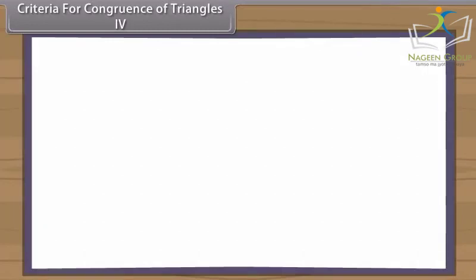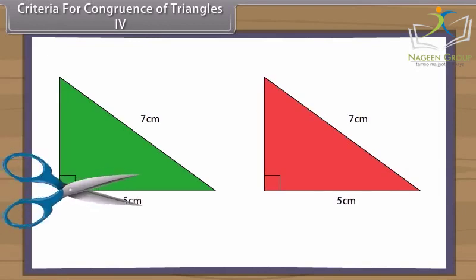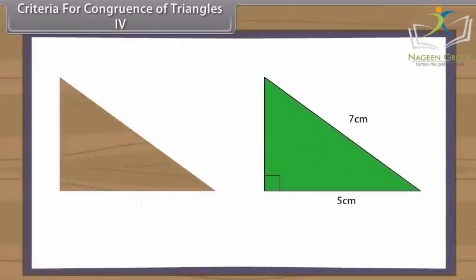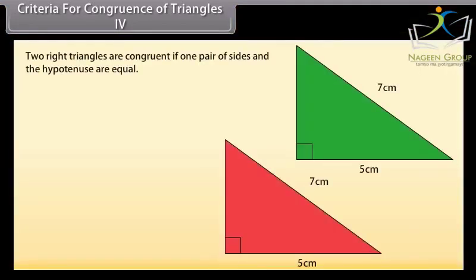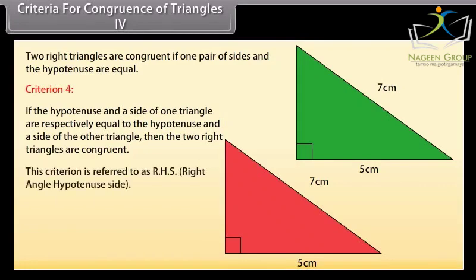Criteria for congruence of triangles 4. Construct two right-angled triangles with hypotenuse equal to 7 cm and one side equal to 5 cm each. Cut them out and place one triangle over the other with the equal side placed on each other. We will observe that the 2 triangles cover each other completely and so they are congruent. Thus, Criterion 4: if the hypotenuse and a side of one right triangle are respectively equal to the hypotenuse and a side of the other triangle, then the 2 right triangles are congruent. This criterion is referred to as RHS — right-angle hypotenuse side.